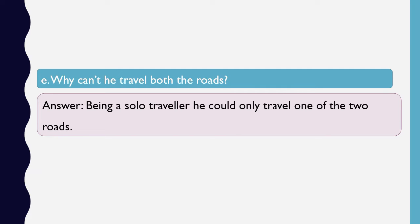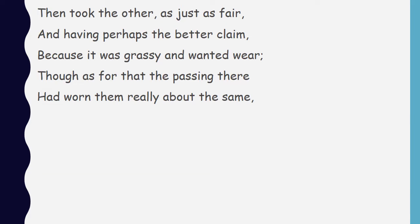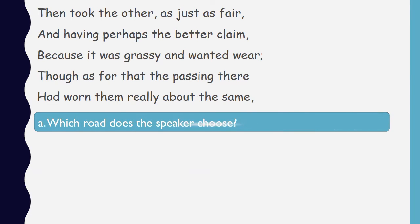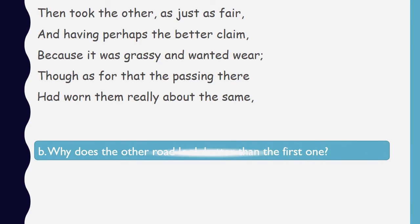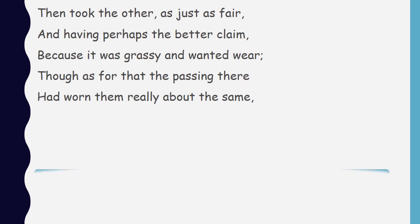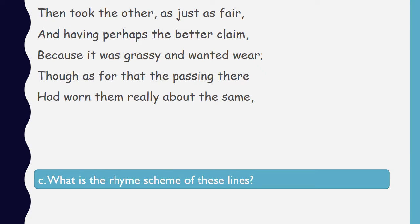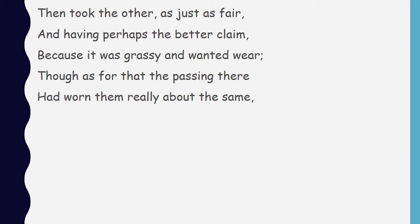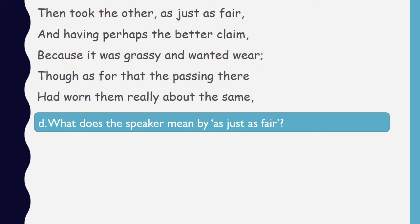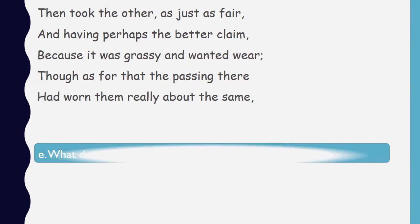Now let's look at the second stanza and its questions. Which road does the speaker choose? Why does the other road look better than the first one? What is the rhyme scheme of these lines? Look at the stanza again — look at the sound with which each line ends and try to figure out the rhyme scheme. What does the speaker mean by 'is just as fair'?